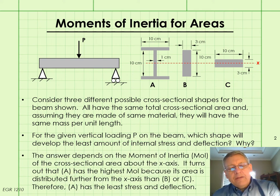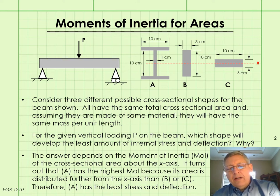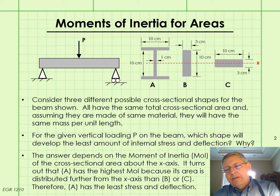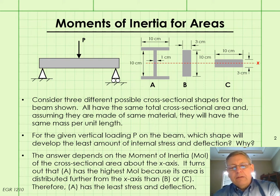The answer depends on the moment of inertia, abbreviated MOI, of the cross-sectional area of each particular shape about the x-axis. It turns out that shape A has the highest MOI because its area is distributed further from the x-axis than the areas of B and C. Therefore, A is going to have the least amount of stress and deflection.